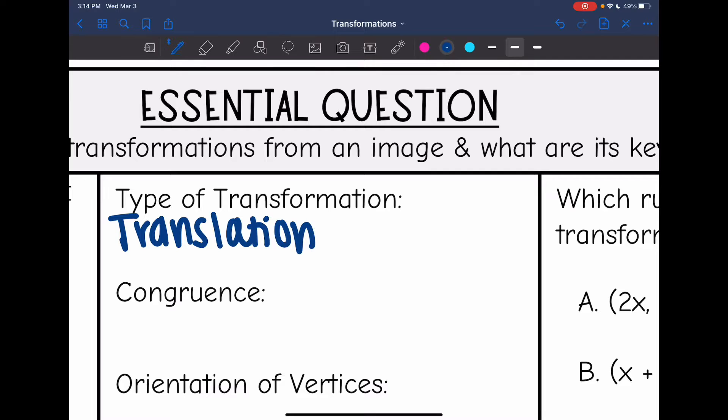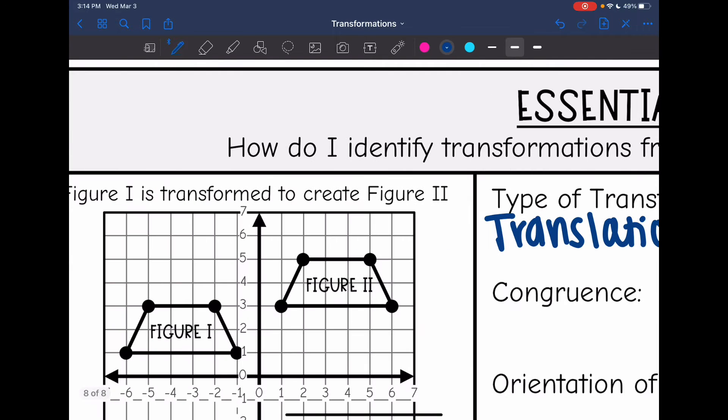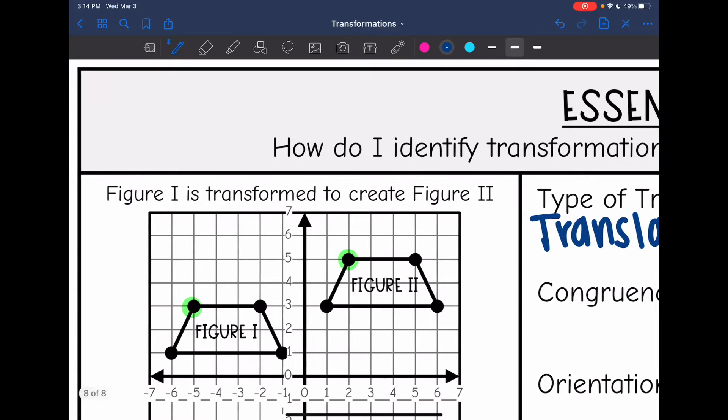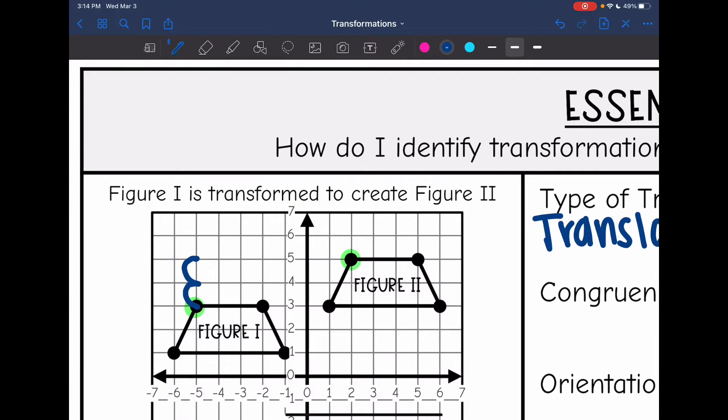And let's figure out how much we translated exactly. So I'm going to choose two corresponding points. I'm going to use these two here. And from that point to that point, it looks like I went up two.